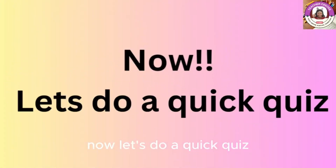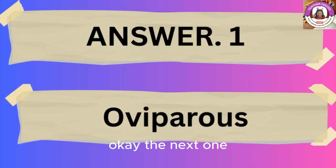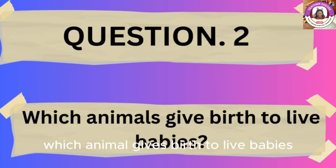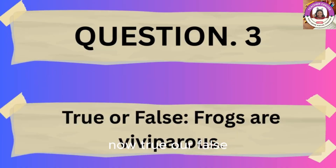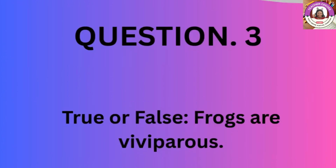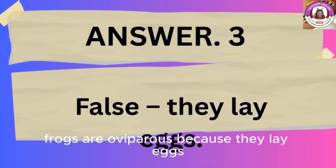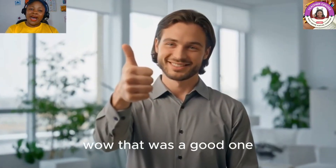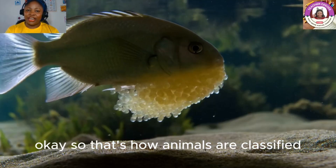Now let's do a quick quiz! What do we call animals that lay eggs? Yes, you're right — oviparous! Next one: which animal gives birth to live babies? Yes, you are right — viviparous! Now true or false: frogs are viviparous. False! Frogs are oviparous because they lay eggs. Wow, that was a good one — you did a great job!